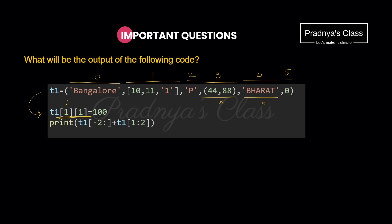Using two indices, we access the list at index 1. Within that list, using index [1][1], we access the element 11. Using the assignment statement, we replace 11 with 100. This is valid because the nested element is a list, which is mutable.